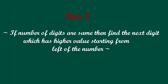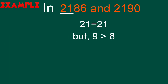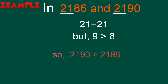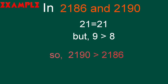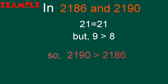Rule number 2: if the number of digits are the same, then find the next digit which has a higher value, starting from the left of the number. In this example, both numbers have 21 in the beginning, but 9 is greater than 8, so 2190 is greater than 2186.